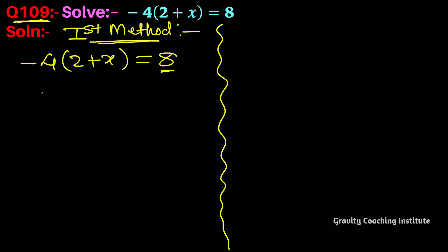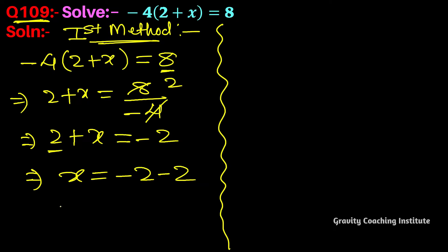So -4 on the right-hand side. 8 divided by -4. We can cancel, so 2 + x = -2. Now transpose the constant term to the right-hand side, it becomes -2. So x = -2 - 2 = -4, which is the required answer. Now the second way.